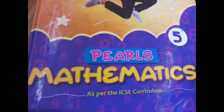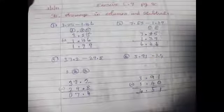Let us go to the section now. In the previous section we read about addition in decimals. Now we have exercise 6.9 and page number 90, we have subtraction in decimals. The first number is 3.25 minus 1.46.